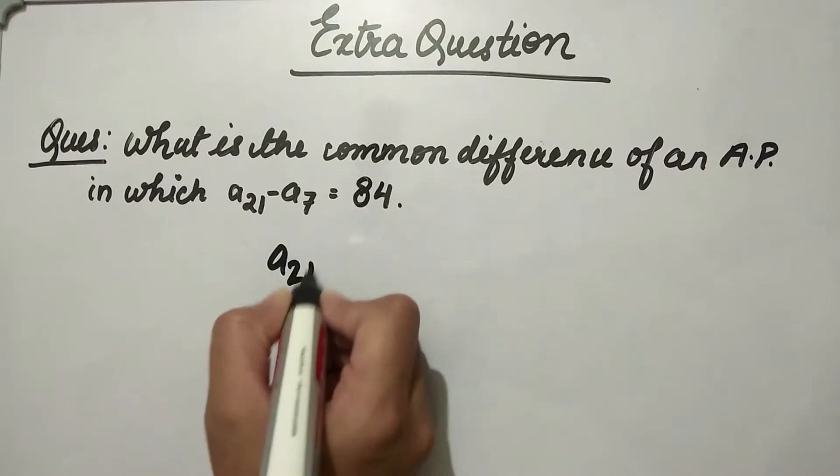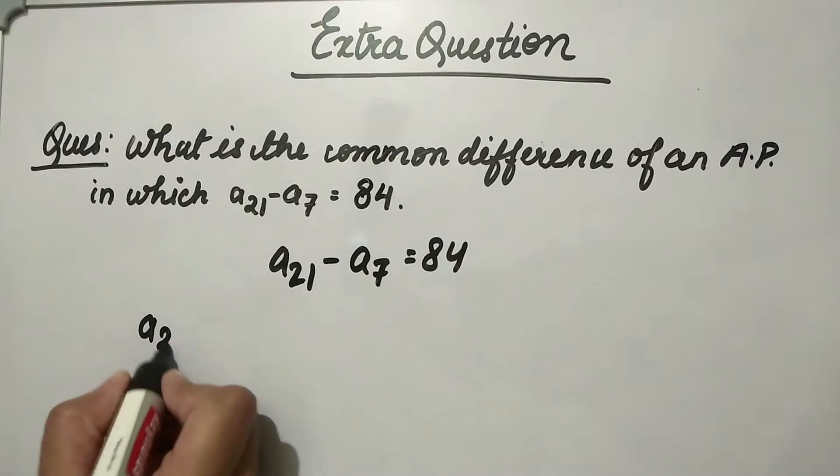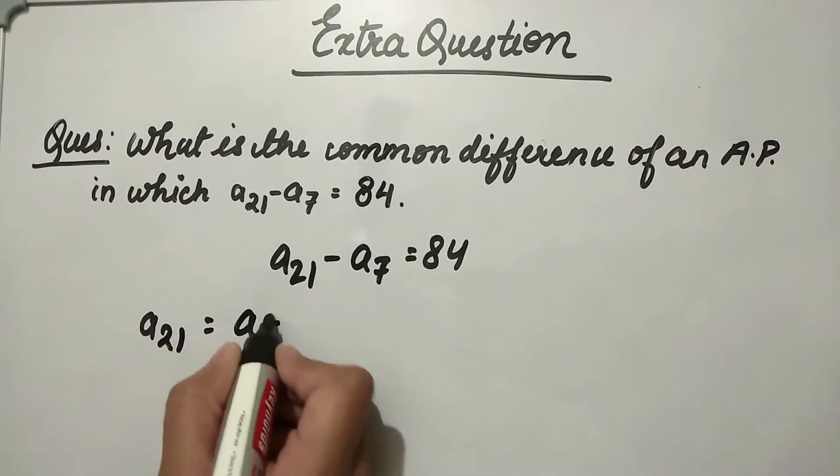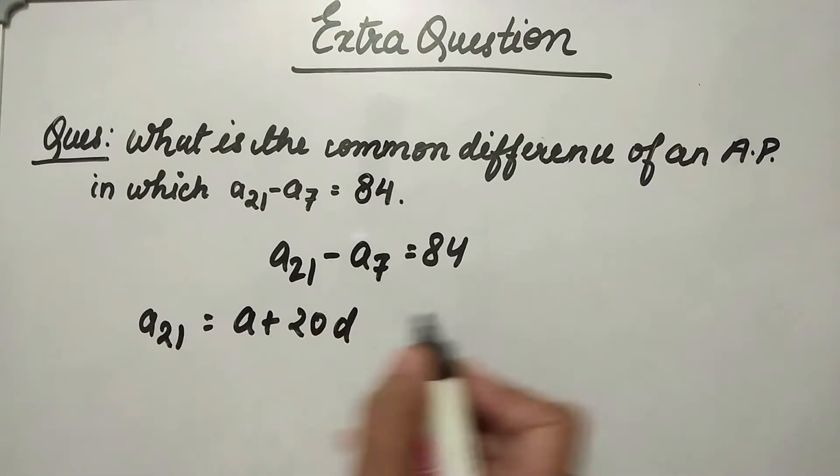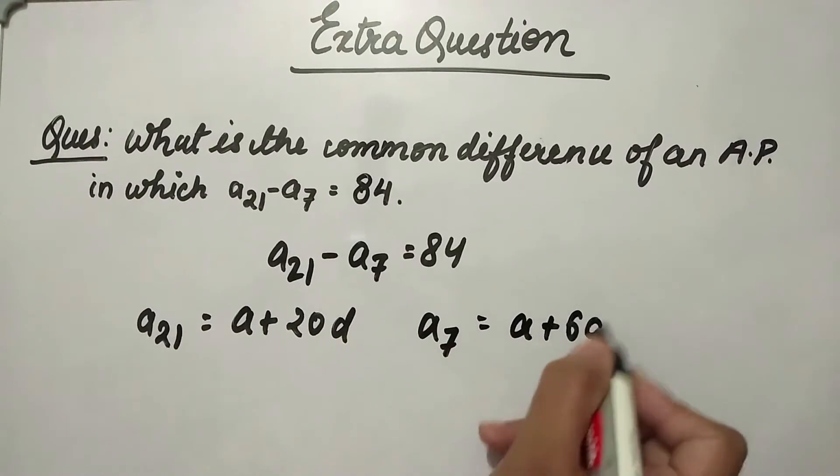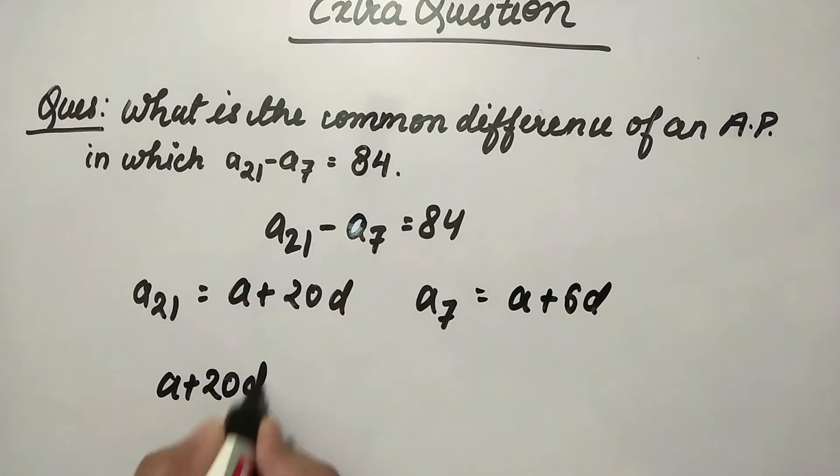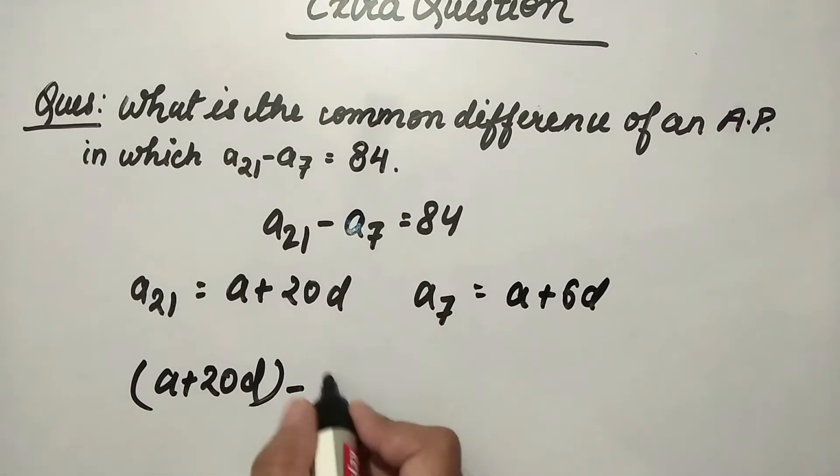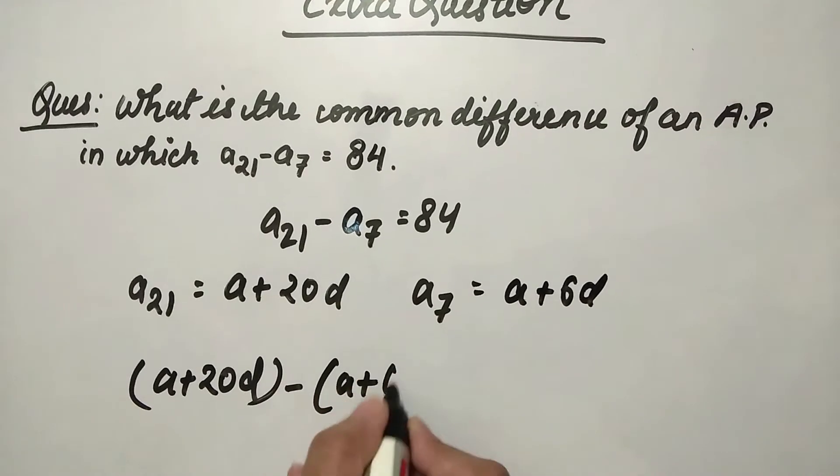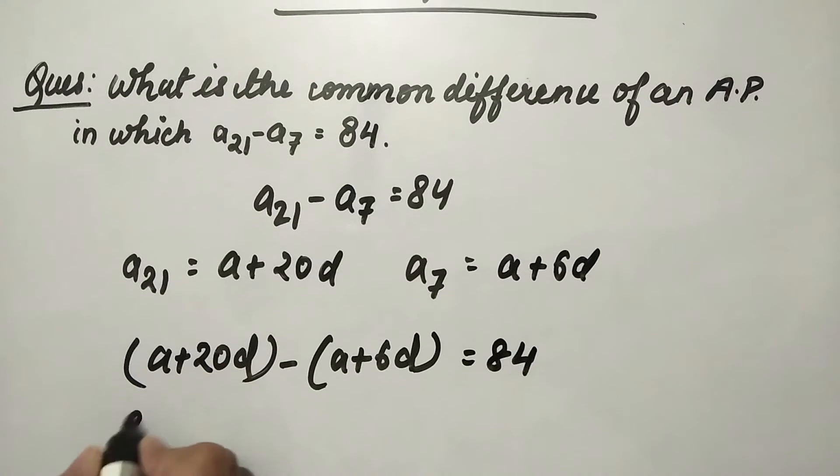We are given a21 minus a7 equals 84. We can write a21 as a plus 20d and a7 as a plus 6d. So we can write: a21, which is a plus 20d, minus a7, which is a plus 6d, equals 84.